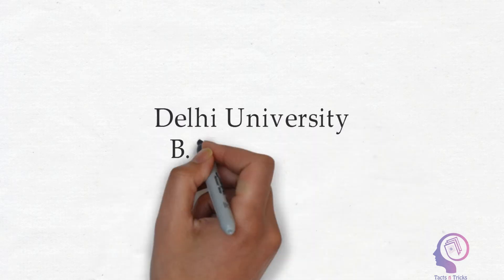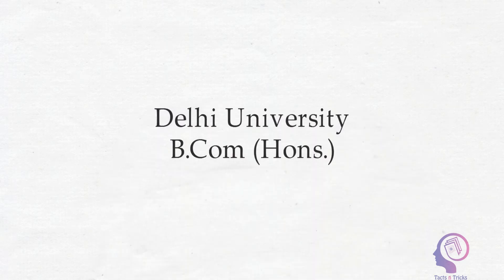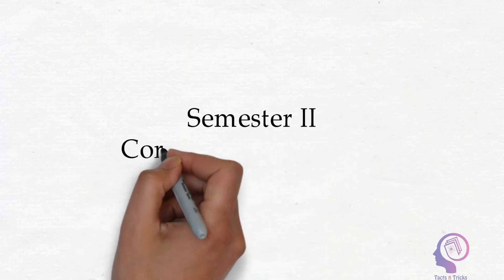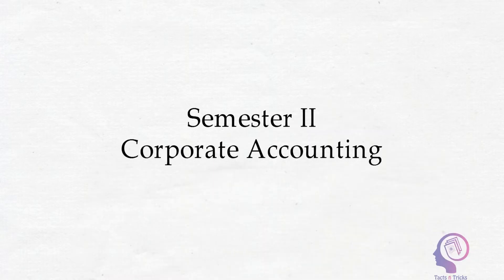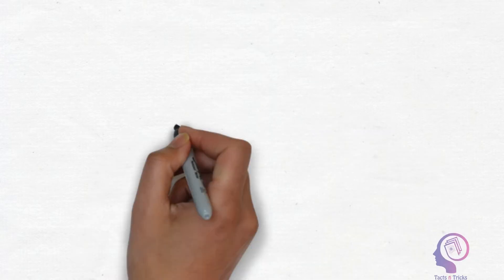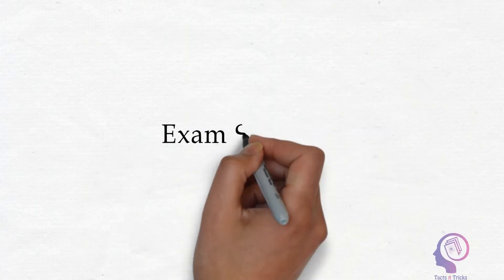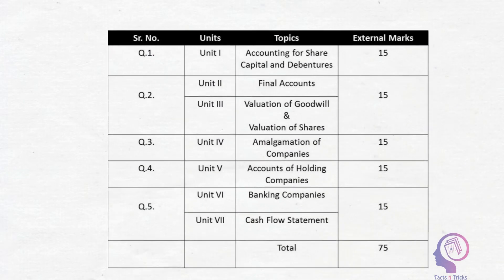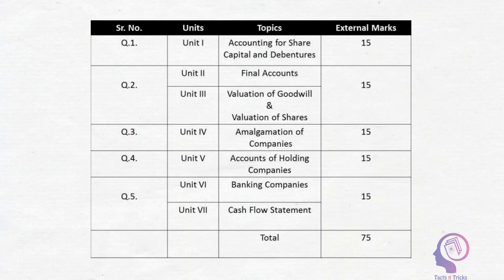Delhi University BCom Honours — today we are going to discuss the Semester 2 Corporate Accounting exam structure. It is slightly different from BCom Program. The paper style is as follows: Question 1 will be from Share Capital and Debentures of 15 marks.